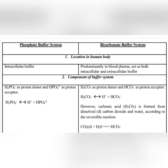Starting from its location: the phosphate buffer is located intracellularly. On the other hand, the bicarbonate buffer is located intracellularly as well as extracellularly, because it is predominantly part of the blood plasma. Then coming toward the second point, which is the components of the buffer system.